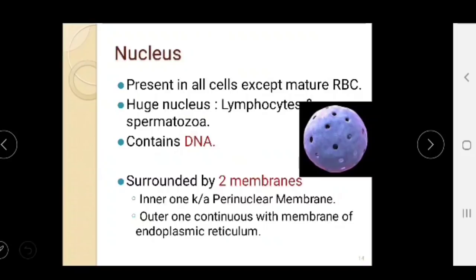The nucleus is present in all cells except mature red blood cells. A large nucleus is found only in lymphocytes and spermatozoa. It contains DNA and is surrounded by two membranes — the inner perinuclear membrane and the outer membrane, which is continuous with the membrane of the endoplasmic reticulum.